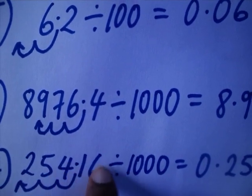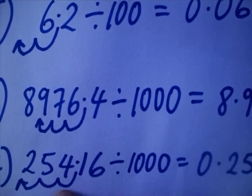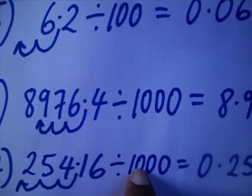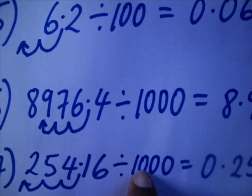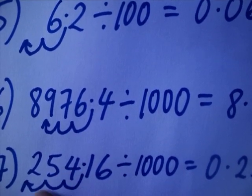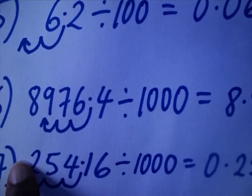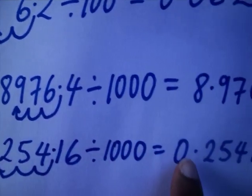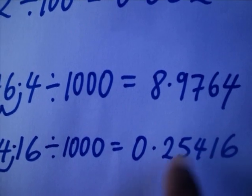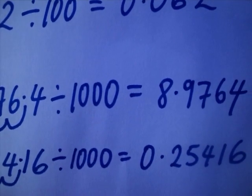Here, 254.16 divided by 1000. I'm going to shift the point how many times? One, two, three times — because you have three zeros. So it is once, twice, three times — the point comes in. So it is 0.25416.